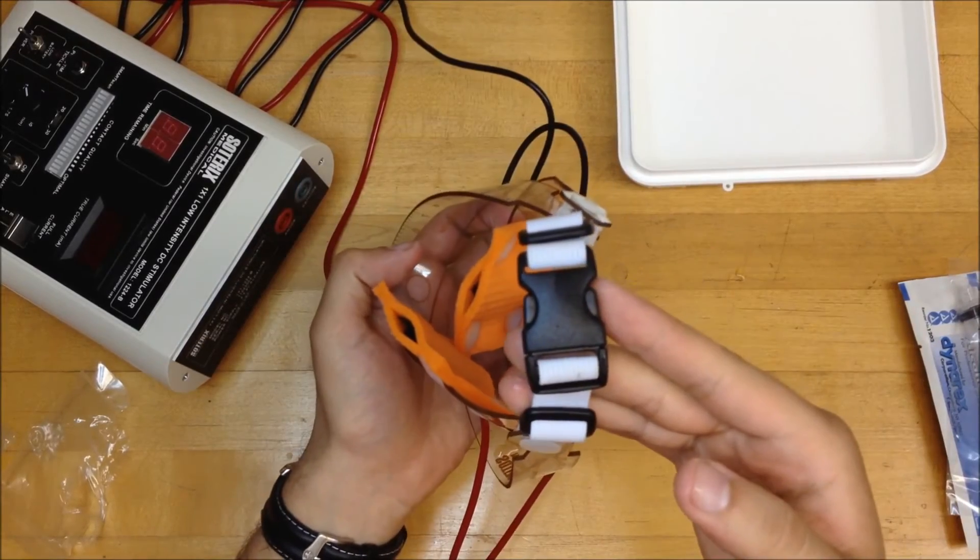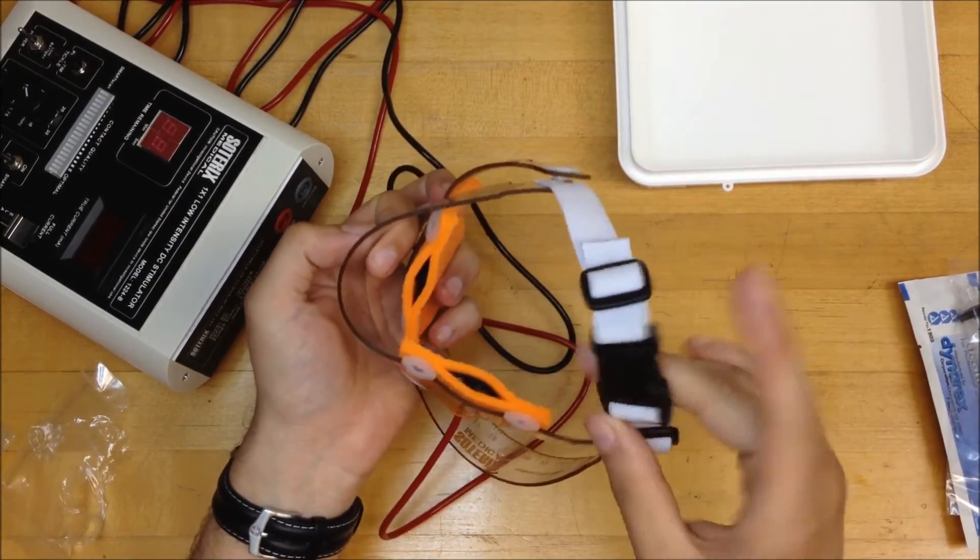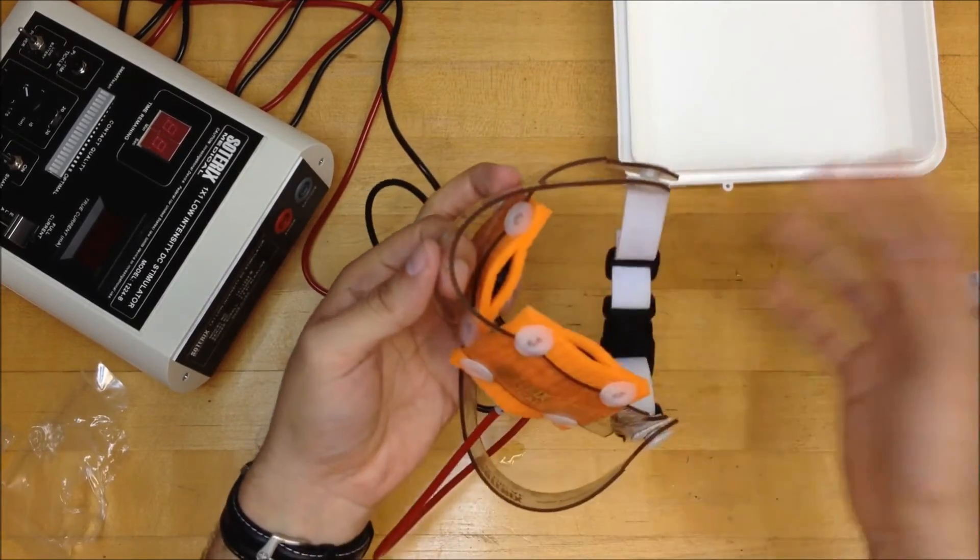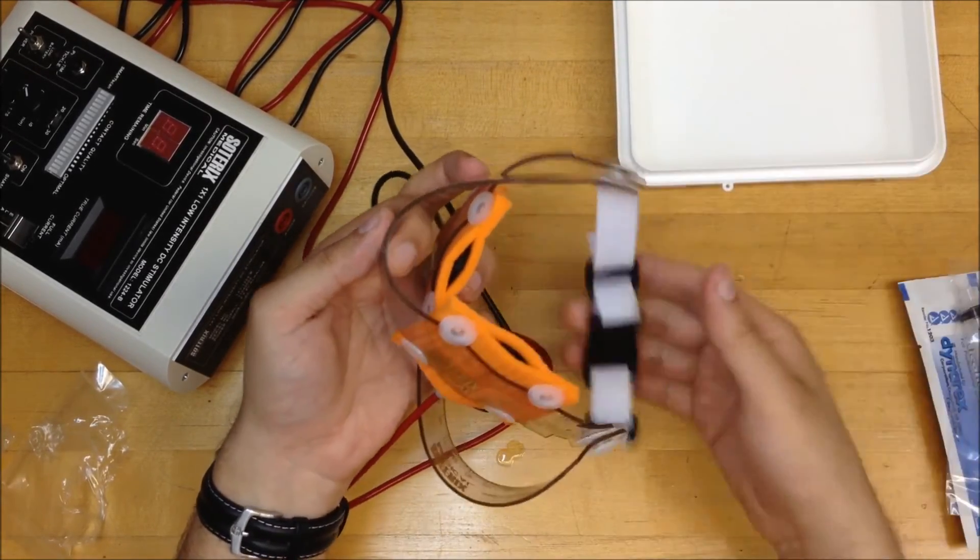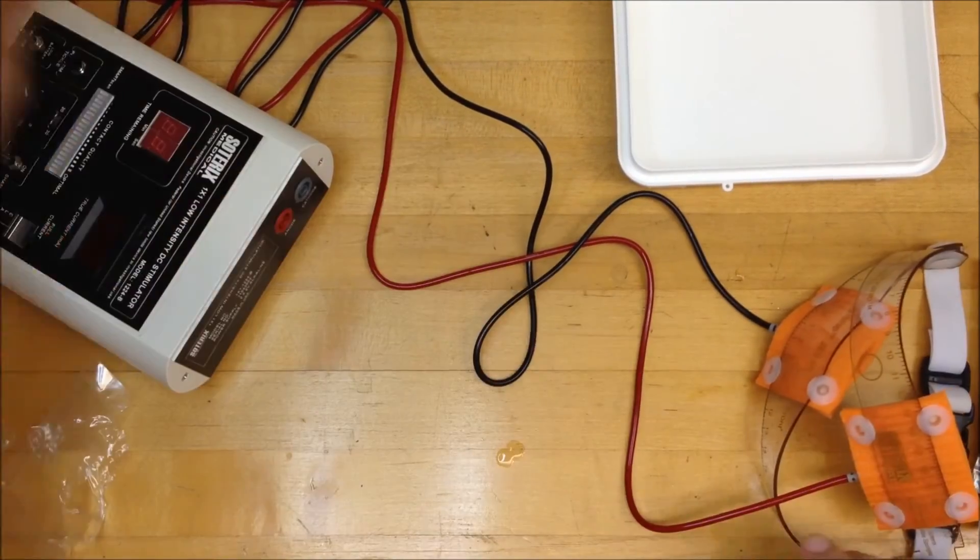One more thing. The Easy Strap comes in a Velcro or a buckle type. The one I have here is the buckle. It depends on the size that they have and what you prefer. So they provide both.